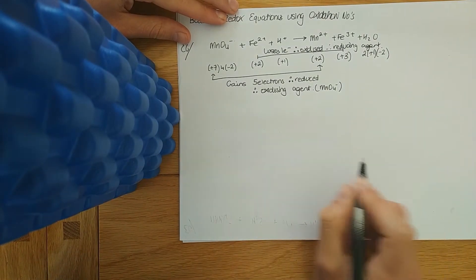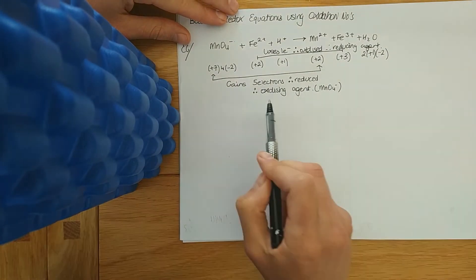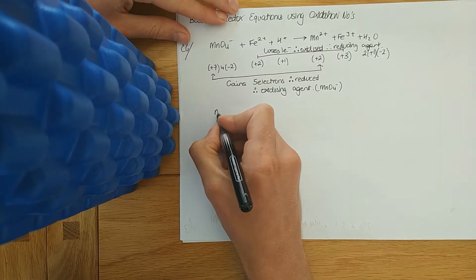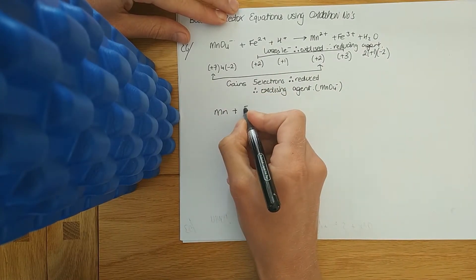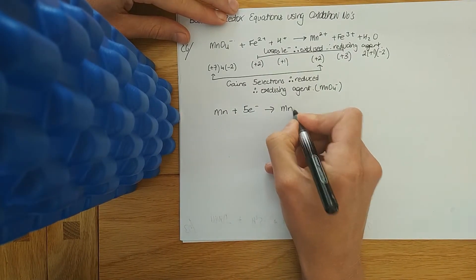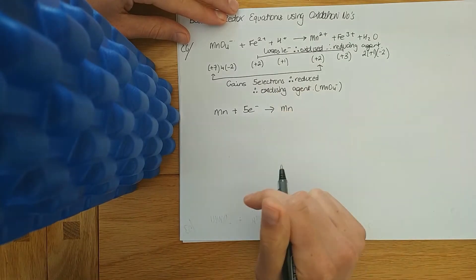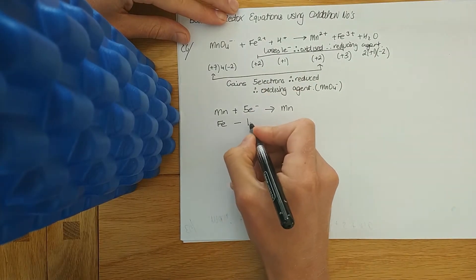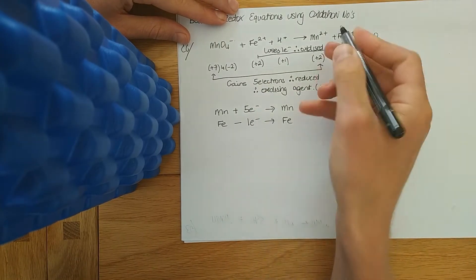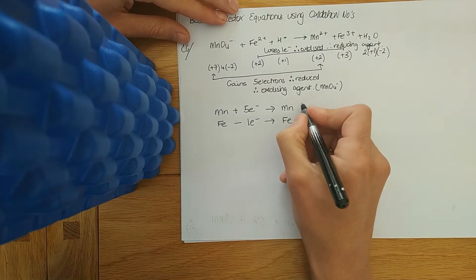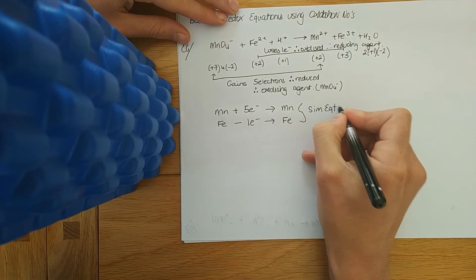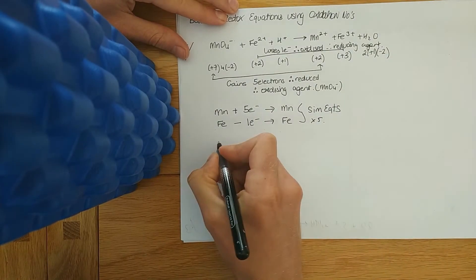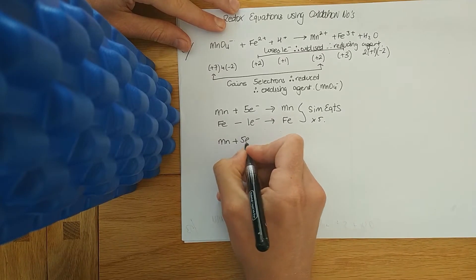Now to balance it using simultaneous equations: in maths, gaining electrons is expressed as a plus. Manganese gained five electrons, so: Mn + 5e⁻ → Mn. Iron loses one electron, so: Fe − 1e⁻ → Fe.